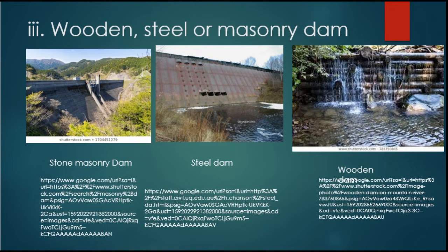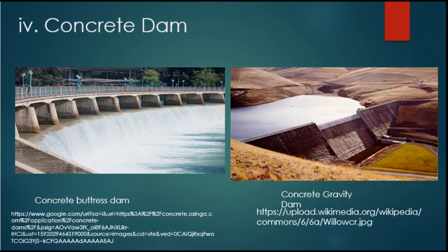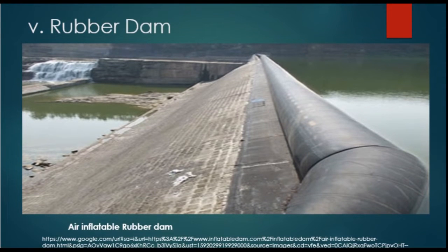The third type is the wooden, steel, or masonry dam. These are used for secondary purposes for small dams. Sometimes stone masonry with concrete is used as a gravity dam. The fourth type is the concrete dam. It is made either from PCC or RCC, and it may be a gravity dam, an arch buttress dam, or any other form.